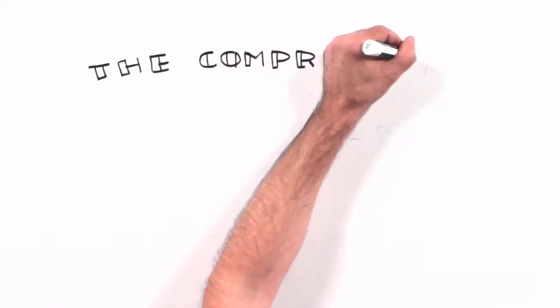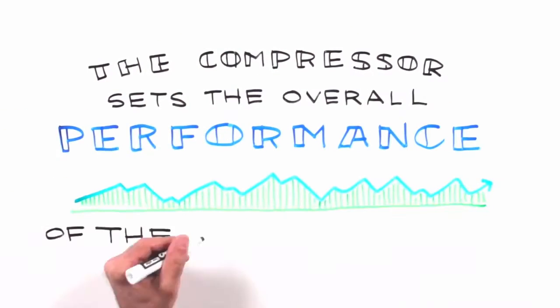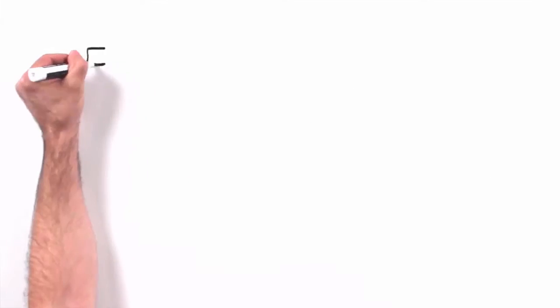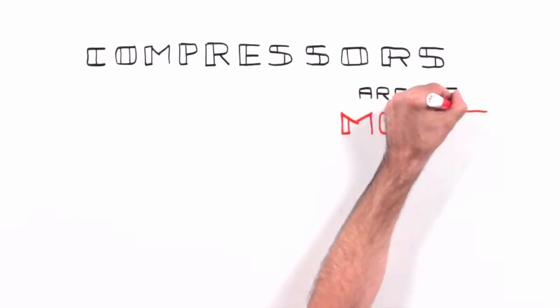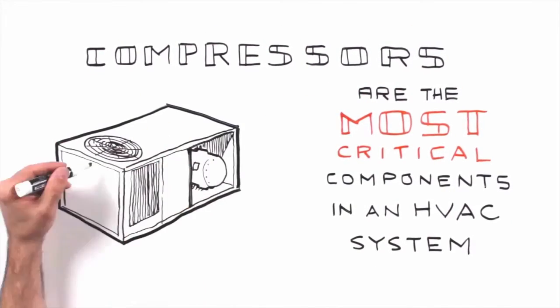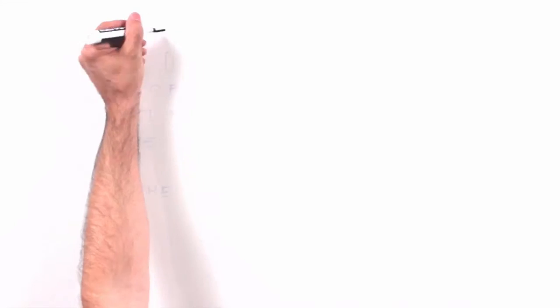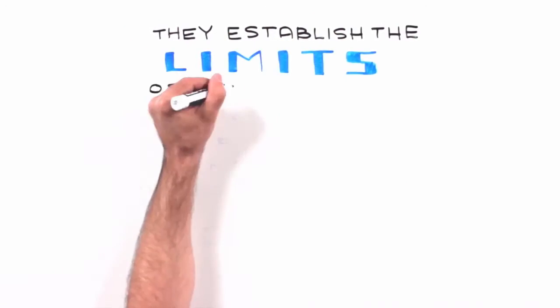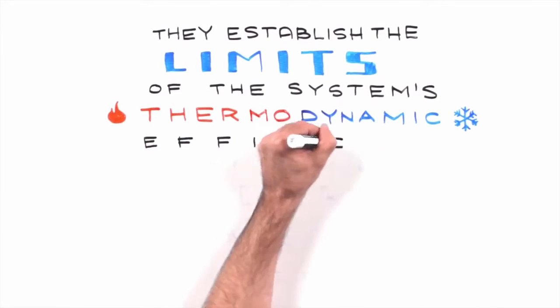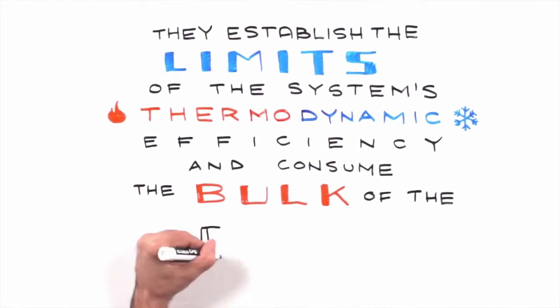In many ways, the compressor sets the overall performance of the HVAC systems, because irrespective of type, compressors and their associated drivelines are the most critical component in an HVAC system. This is because they establish the limits of the system's thermodynamic efficiency and consume the bulk of the energy used.